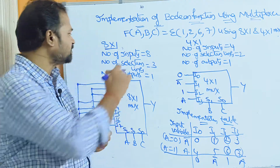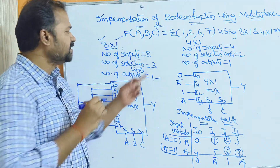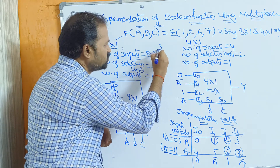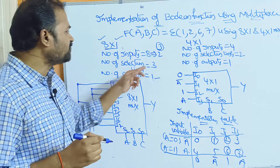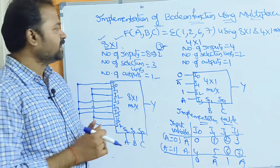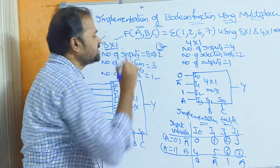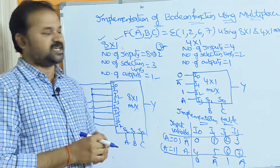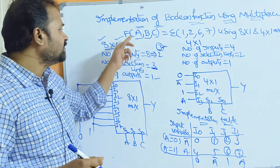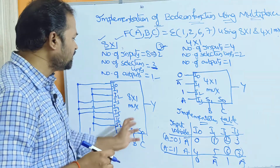An 8-by-1 multiplexer means the number of inputs is 8 and the number of outputs is 1. We can write 8 as 2 to the power 3, so the number of selection lines is 3. In this example we have 3 variables a, b, c, and in an 8-by-1 multiplexer we have 3 selection lines, so we can take a, b, c as the 3 selection lines.